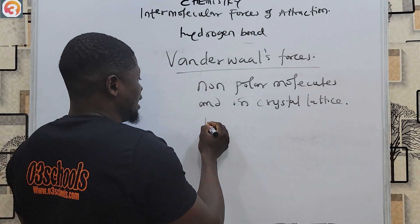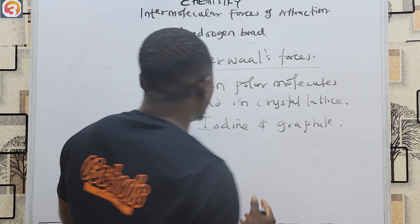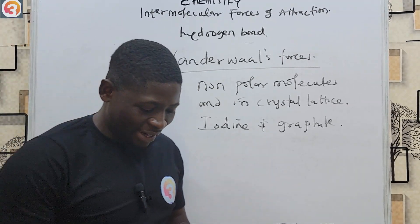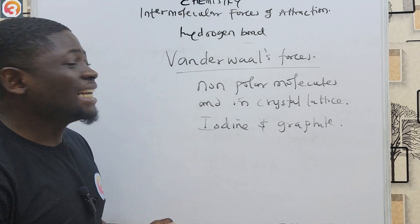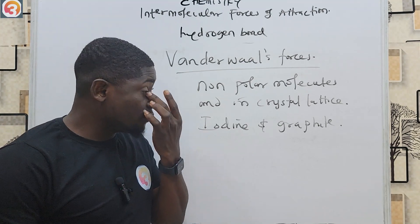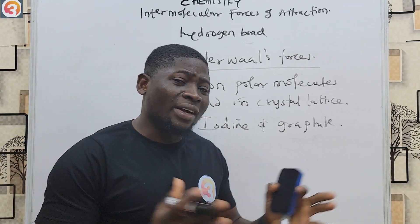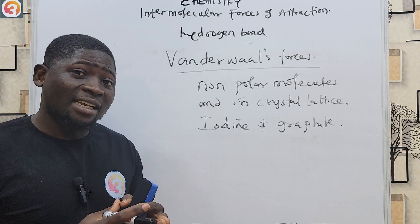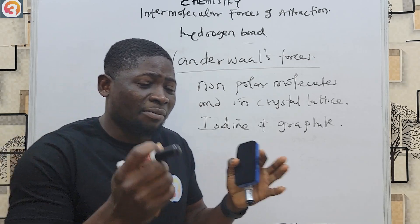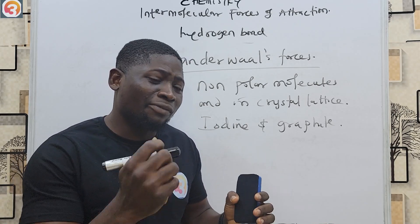Examples of substances with van der Waals forces include iodine and graphite. Van der Waals forces are the weakest form of all intermolecular forces of attraction. However, if a large number of van der Waals forces interact between atoms or objects, the combined force can become very strong.